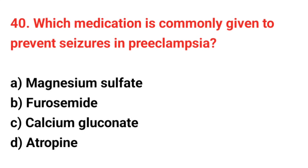Question number 40: Which medication is commonly given to prevent seizures in pre-eclampsia? The right answer is option A: Magnesium sulphate.